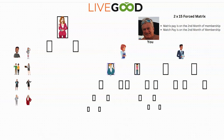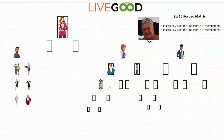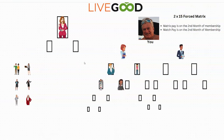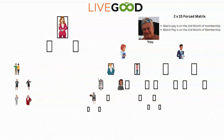Let's say she sees she has some people and wants to go to work. Her first person would go underneath her first person's spot because that's the next available spot in her matrix. Her matrix consists of her first two people and their first two people. When he enrolls his next person, that person would go right to the next available spot. If he enrolls one more person, that next person would go on that next level right there.